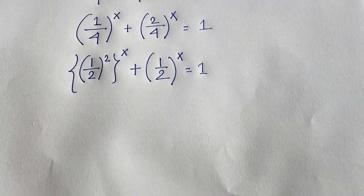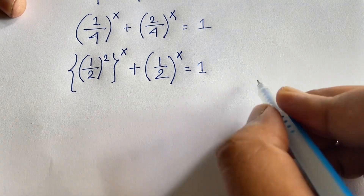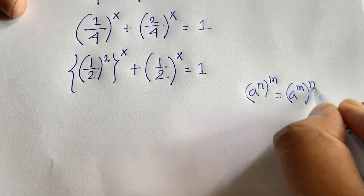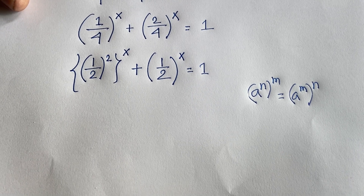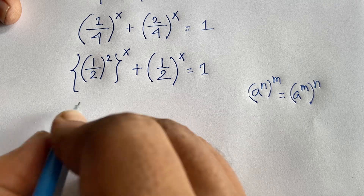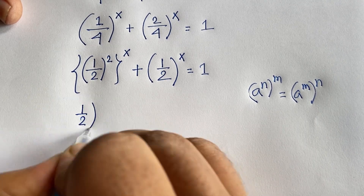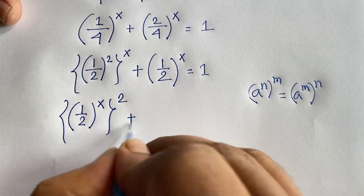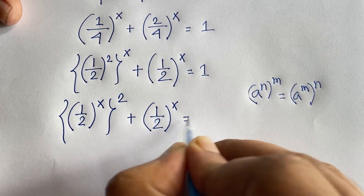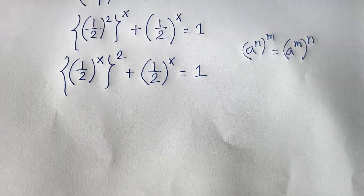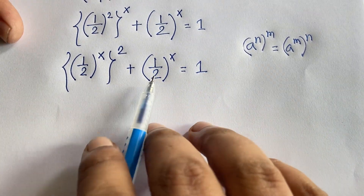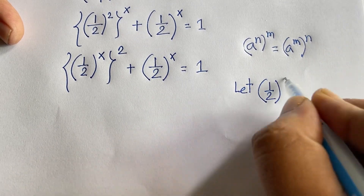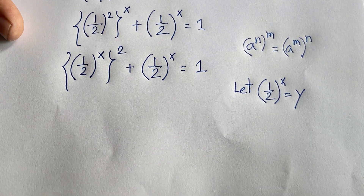We know that (a^n)^m equals a^(mn). According to these exponential rules, I can move the exponent, so the expression becomes (1/2)^x whole to the power 2, plus (1/2)^x is equal to 1. Now let y equal (1/2)^x.